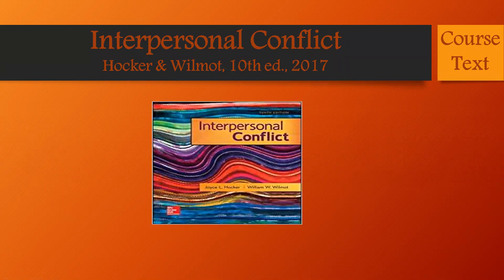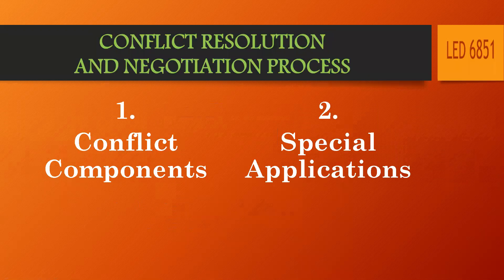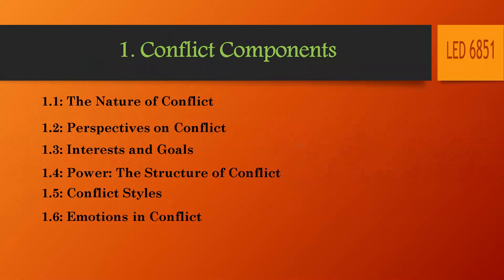Your course text is Interpersonal Conflict, Hawker and Wilmot, 10th edition, 2017. The Conflict Resolution and Negotiation Process has two major parts: the first part, Conflict Components, and the second part, Special Applications for the Conflict Resolution and Negotiation Process.